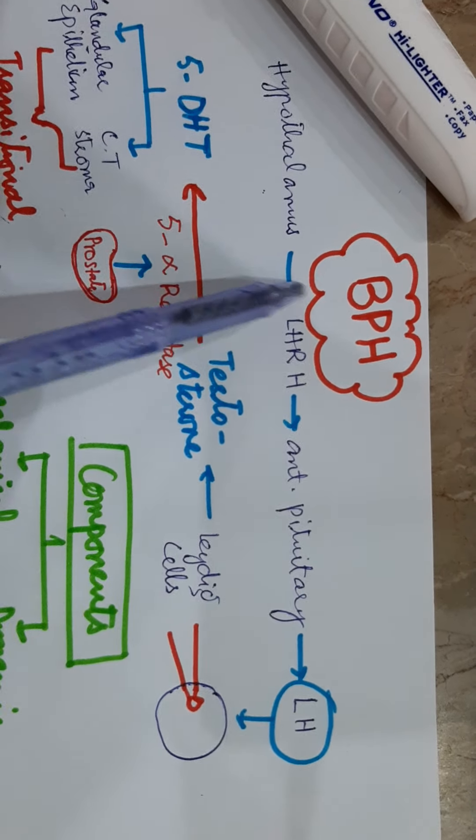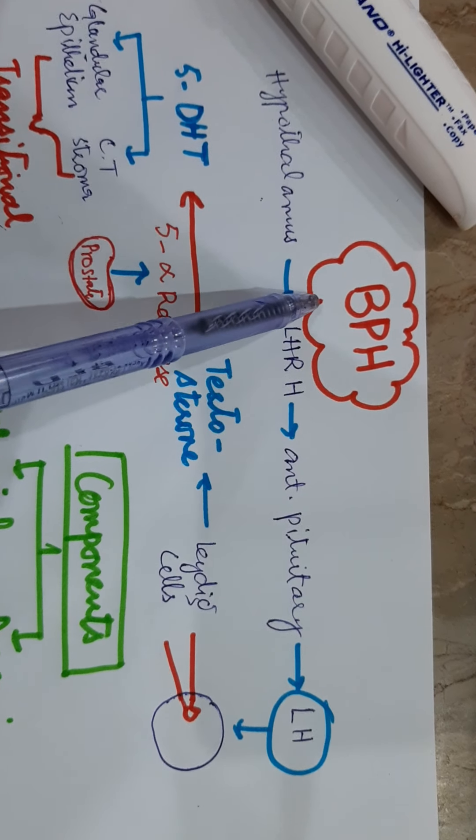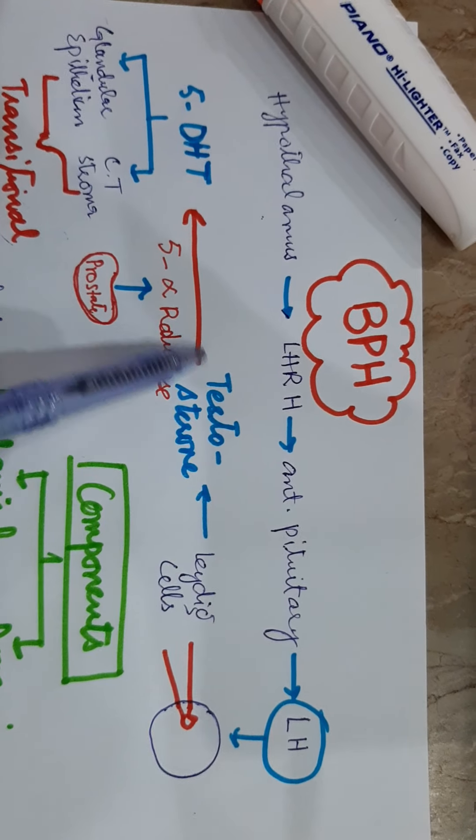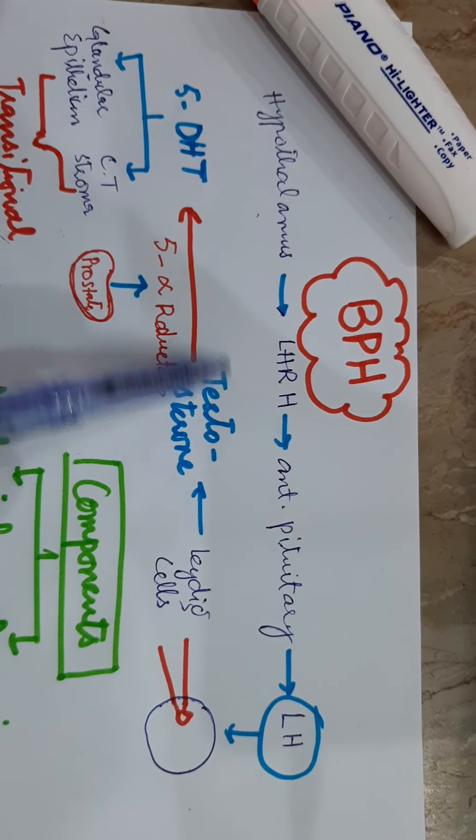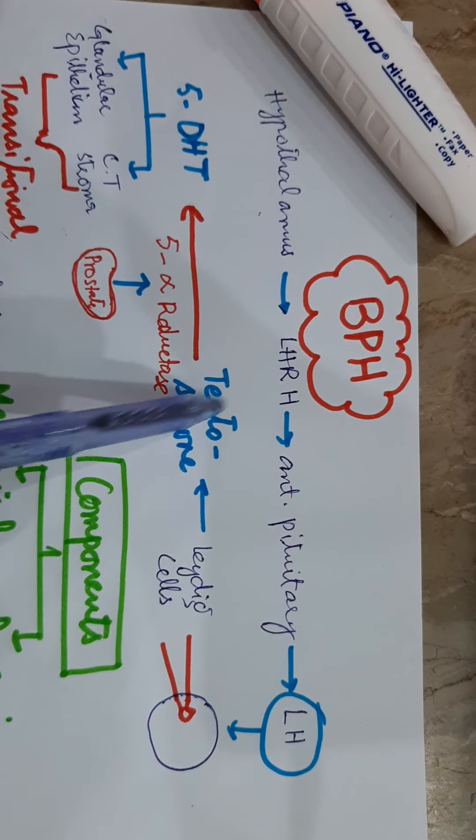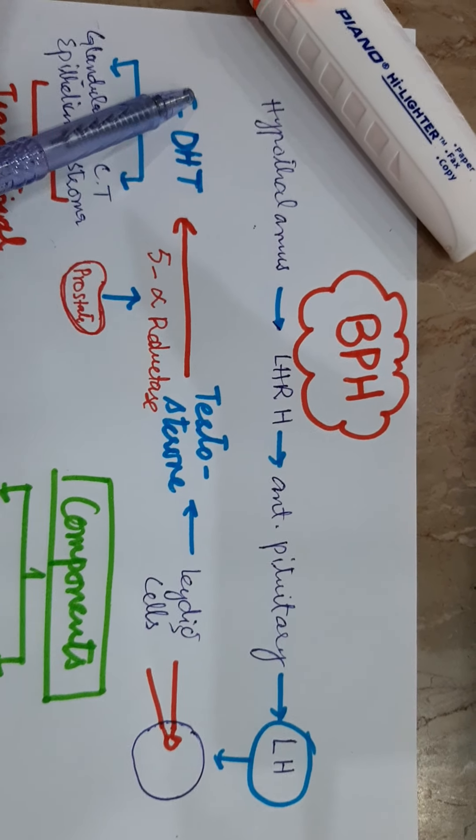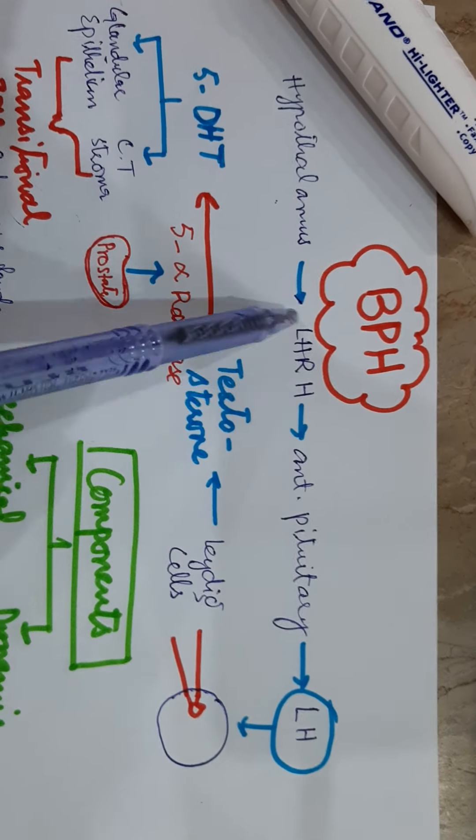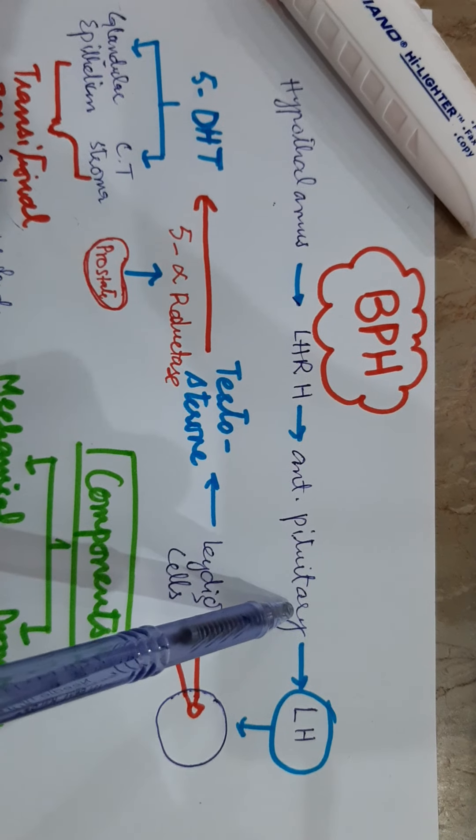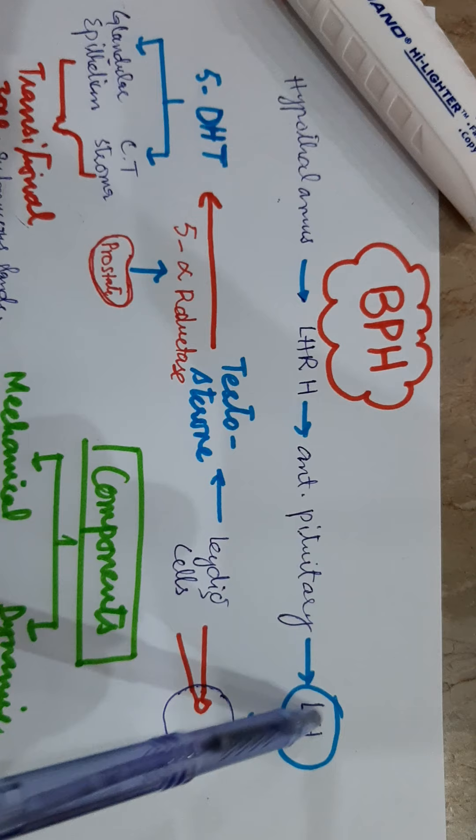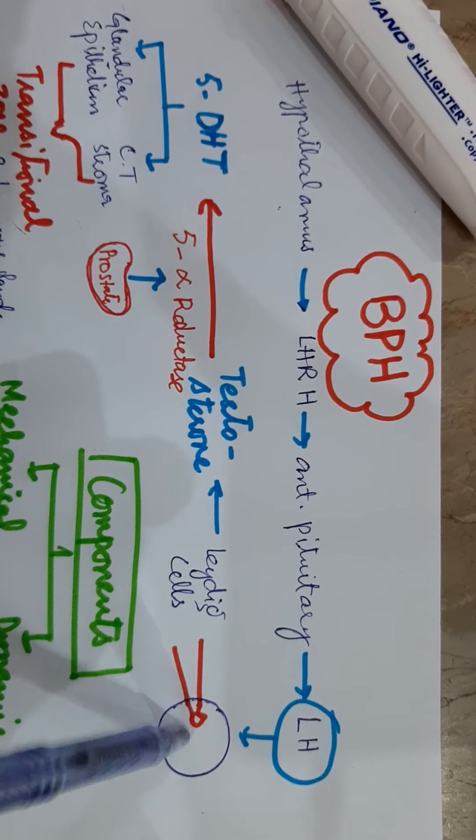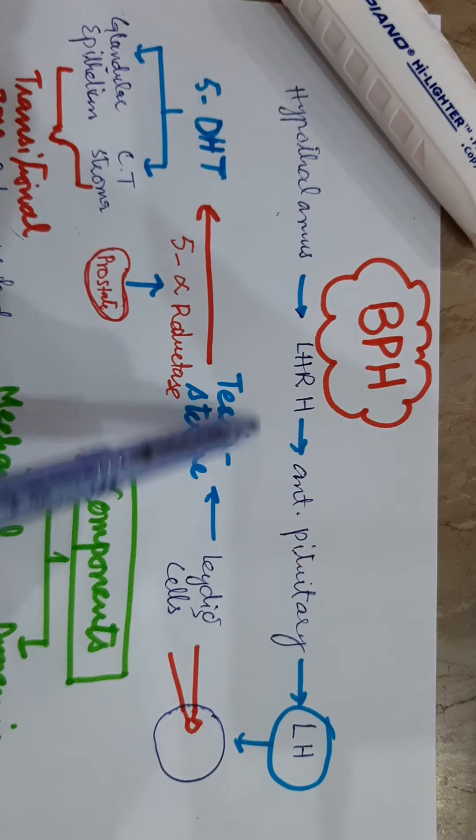This is a testosterone-dependent benign tumor produced by excessive secretion of testosterone. Hypothalamus releases luteinizing hormone-releasing hormone which acts on the anterior pituitary, which releases luteinizing hormone. This acts on the Leydig cells of the testes, and Leydig cells produce testosterone.